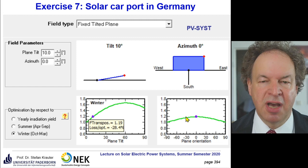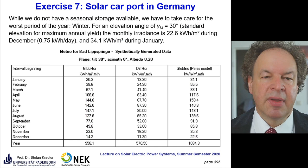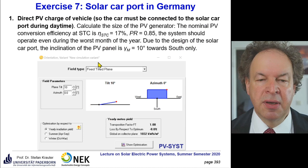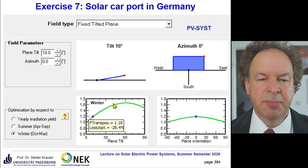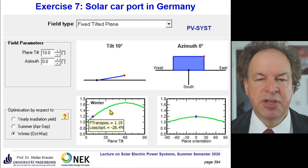Plane orientation towards south is quite good for the optimum. Making a comparison of elevation angles: at 30 degrees of elevation, which is the standard elevation for maximum yield, this is the yearly optimization result. The optimum comes at 30 degrees of tilt, giving an 8% gain against 10 degrees for yearly energy yield.